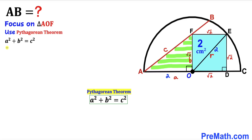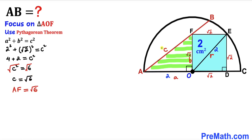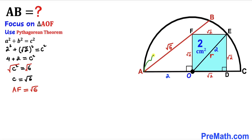Filling in the Pythagorean formula: 2² + (√2)² = c², which gives 4 + 2 = c², so c² = 6. Taking the square root of both sides, c = √6. This side c represents length AF, so AF = √6 centimeters.